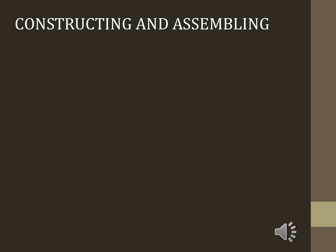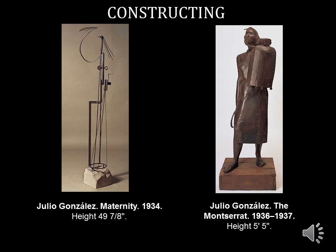The next sculptural method is constructing and assembling. In this slide we have two examples by the same artist, Julio Gonzalez. On the left is Maternity from 1934, and on the right is Montserrat from 1936-1937. Both sculptures are made of welded iron — Montserrat is made of welded sheet iron that was shaped, formed, and welded together, while Maternity uses different shapes of iron rods. Gonzalez gained an interest in welding after briefly working at an automobile factory and also assisted Pablo Picasso in his metal sculpture work.